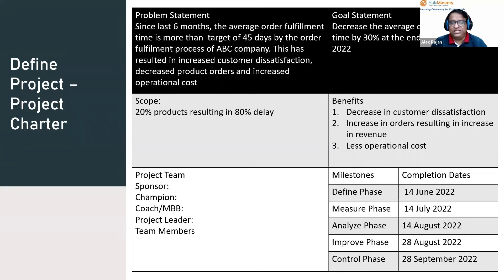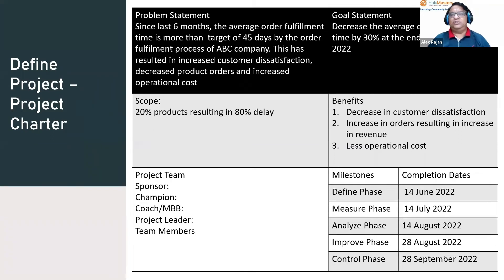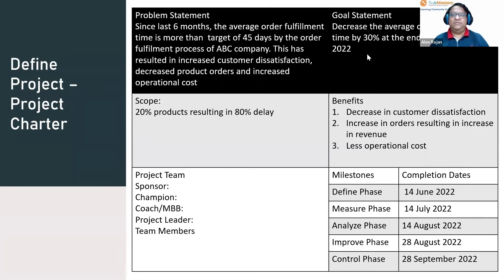In the goal statement, we define what the project team is going to achieve in the next four to six months. A Green Belt project is completed within four months and a Black Belt project is completed in six months. For this Green Belt project, we say: decrease the average order fulfillment time by 30% by the end of September 2022.